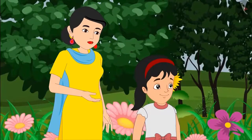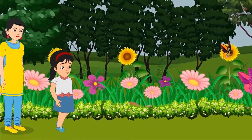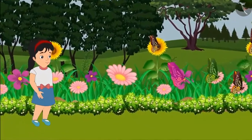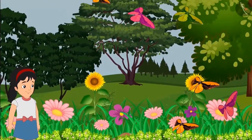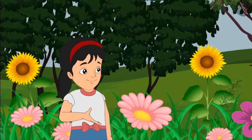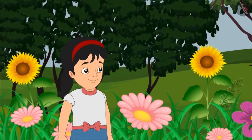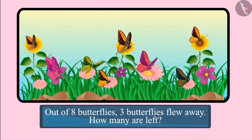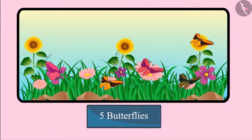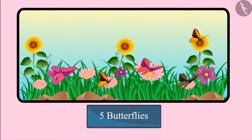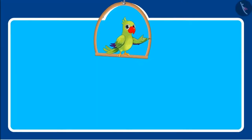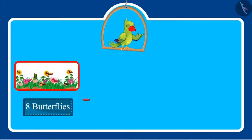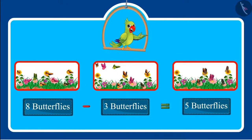Pinky's mother confirms she is absolutely right. Pinky goes a little closer to the flowers to see the butterflies more closely, and three butterflies fly away. Out of eight butterflies, three butterflies flew away. So how many butterflies are left on the flower? Five butterflies are left. Children, if we subtract three from eight, then five is left.